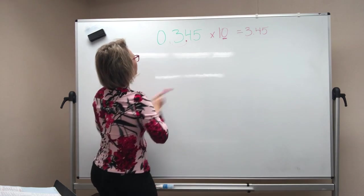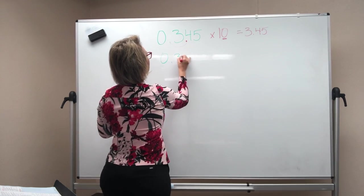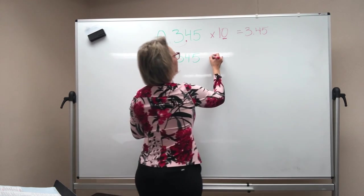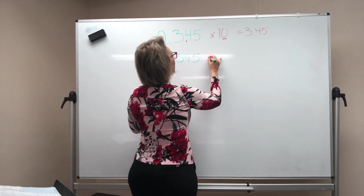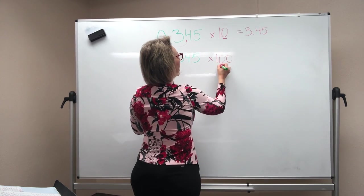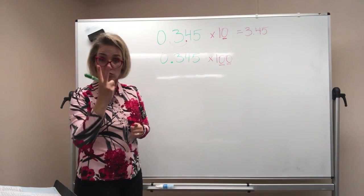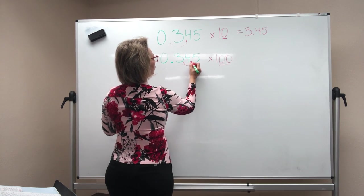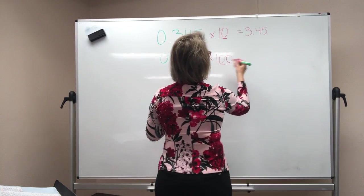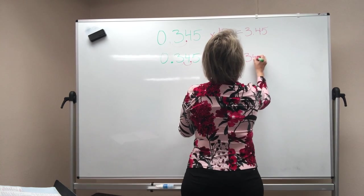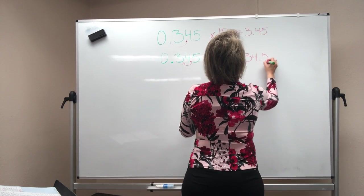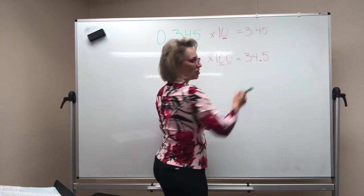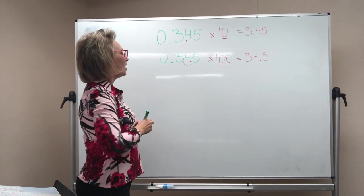Let's take the same number. I'm going to just write it again here and we're going to multiply it. I'll make that decimal nice and big so you can see it. This time, let's multiply it by 100. How many zeros are in 100? Two, right? So the answer is just moving the decimal two places over. So my final answer is 34.5, 34 and 5 tenths. I've got to make sure I make my decimals big enough for you to see.